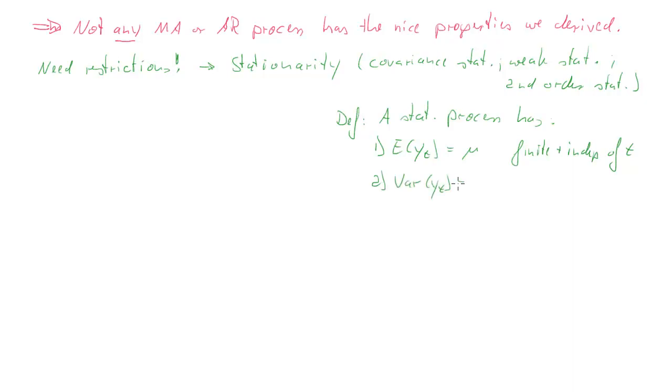Second, the variance of Yₜ, and let's label that γ₀, is also finite and independent of t. And third, the covariance of Yₜ with Yₜ₋ⱼ, let's call that γⱼ, is equally finite and independent of t for any value of j. So these are the covariances for different lags, and they should be the same at any time, only dependent on the lag j, but not on the time t.